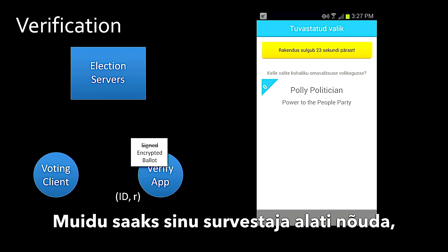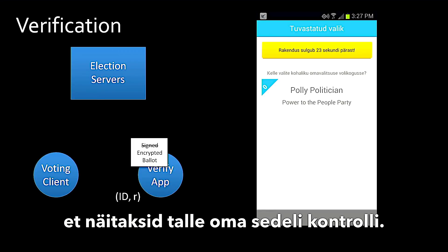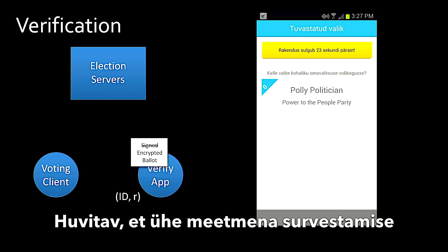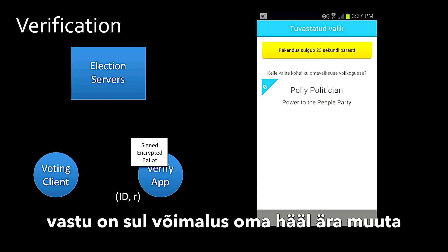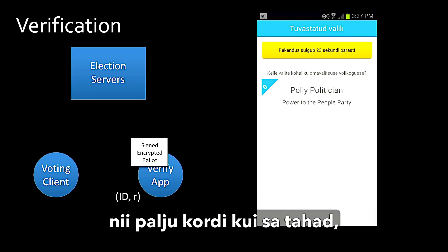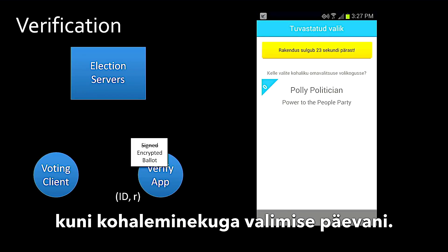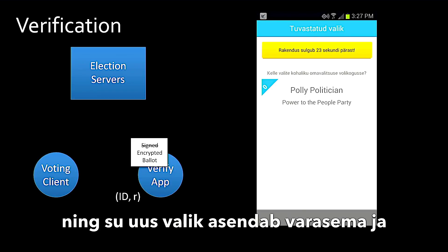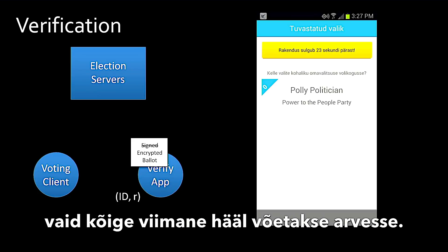Otherwise, someone who wanted to coerce you could just say, show me your verification. As another safeguard against coercion, you have the ability to replace your vote as many times as you want up until the in-person election. You just do the process again and your new vote takes the place of your old vote — only the most recently cast is counted.